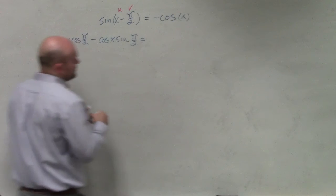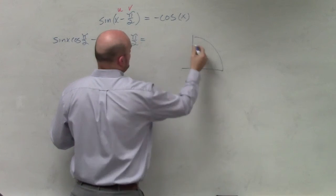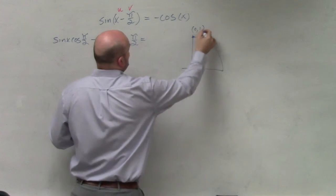So cosine of pi halves, I might not know that off the top of my head, so I just kind of sketch a unit circle here real quick. Pi halves is right here, which is 0 comma 1.